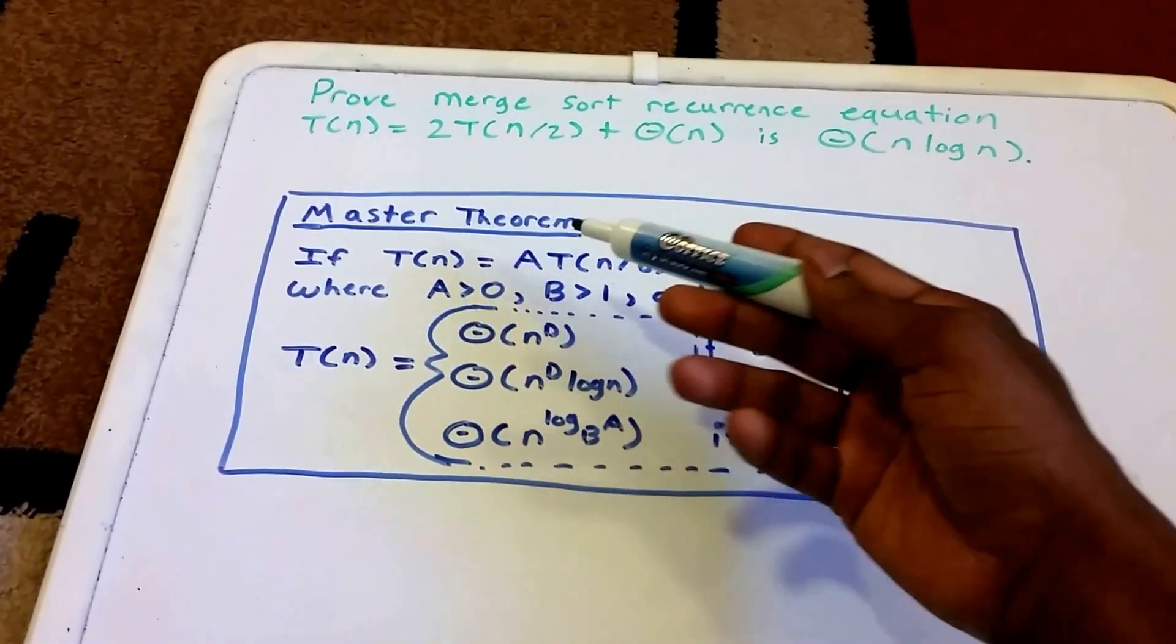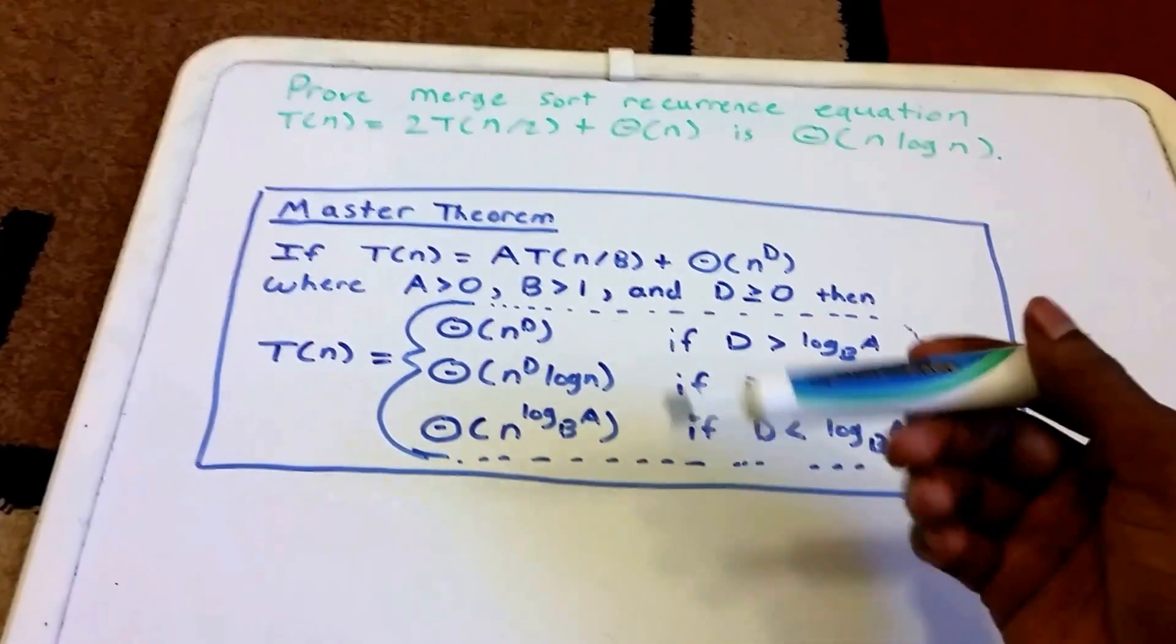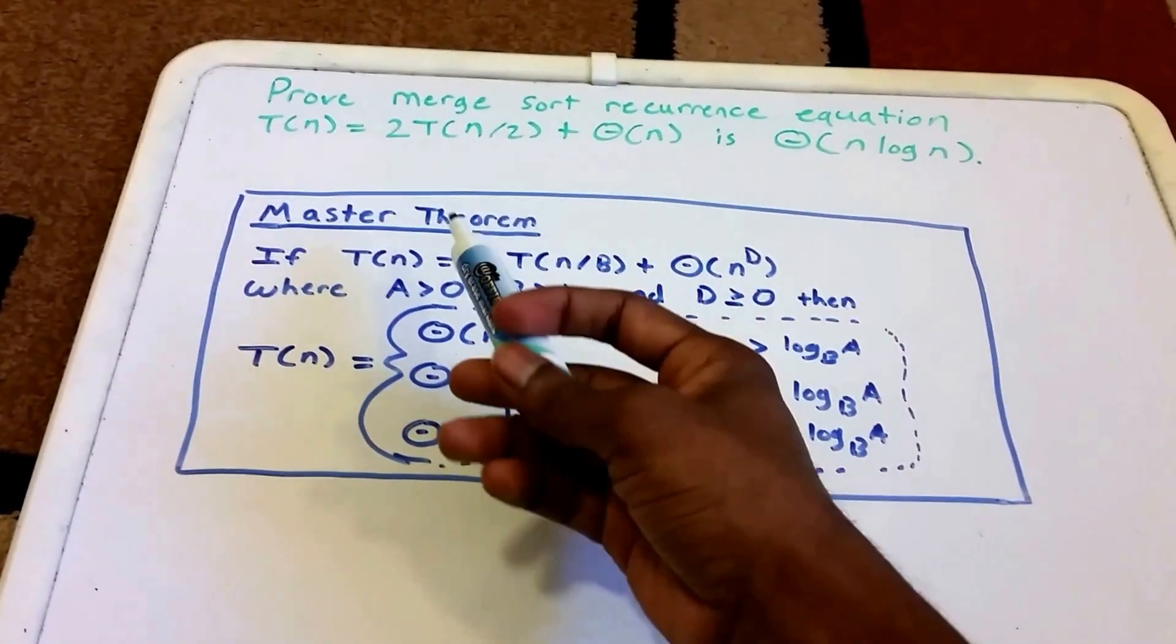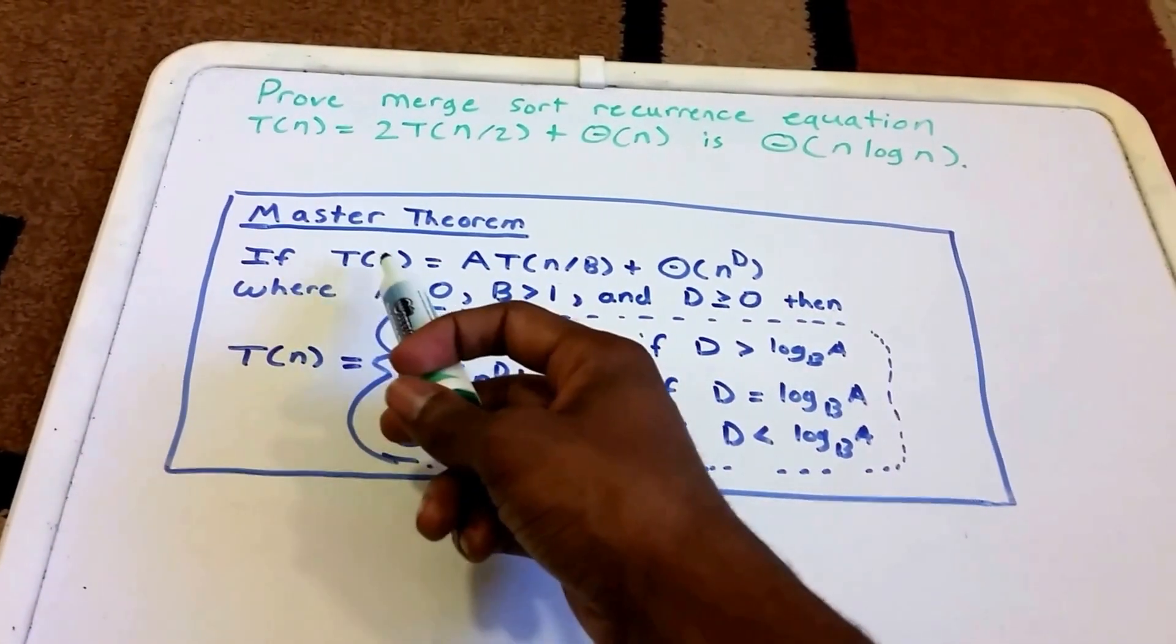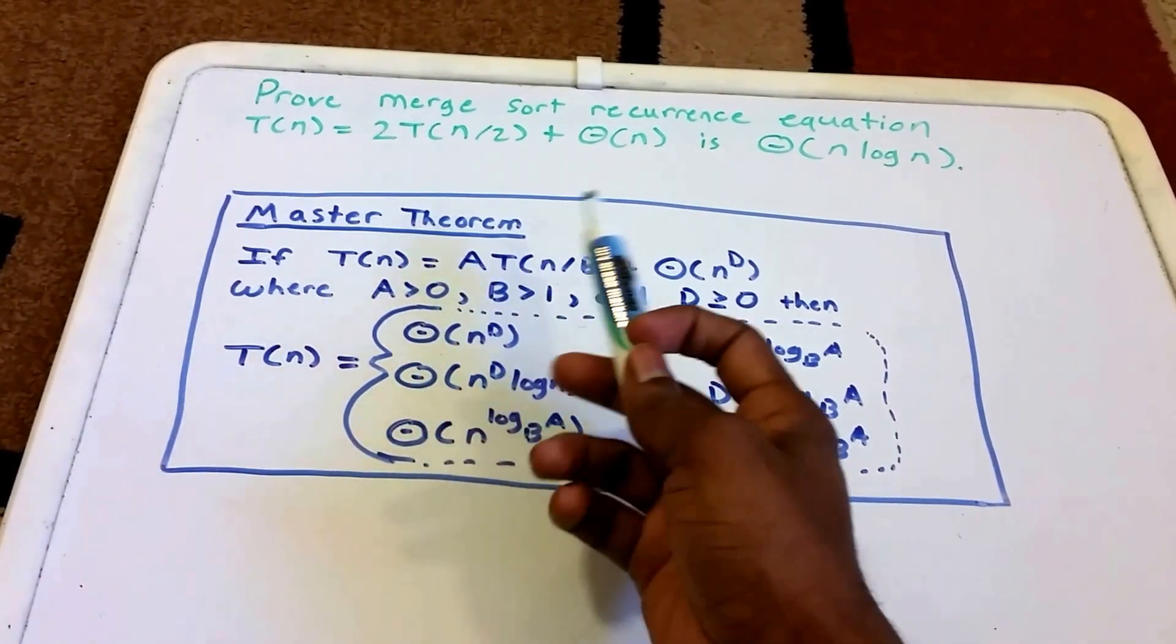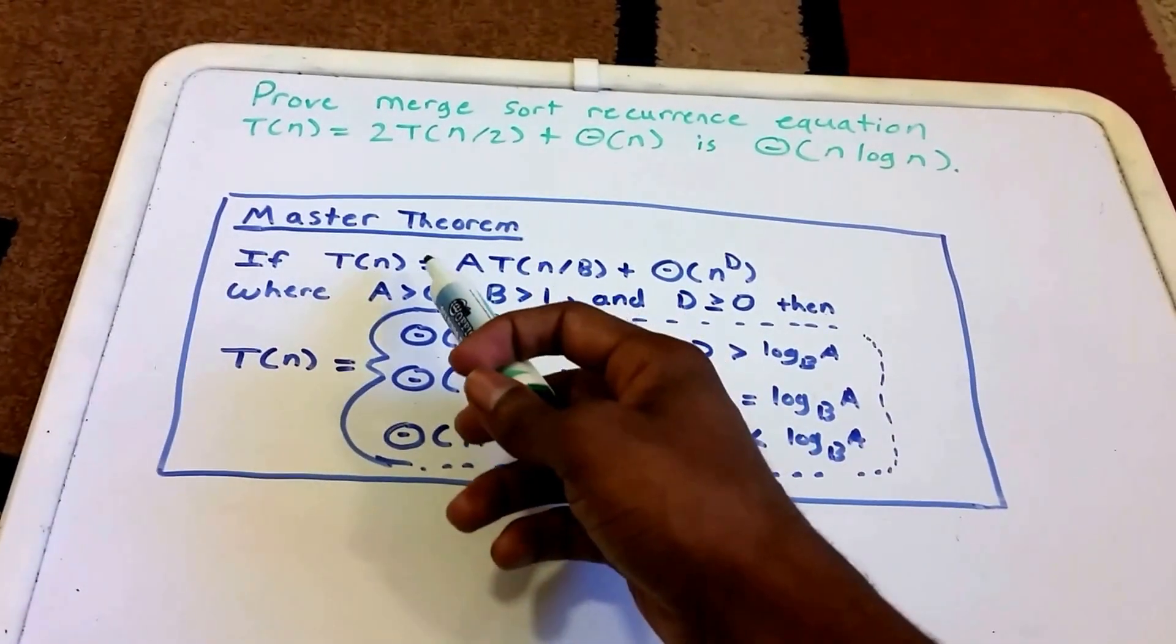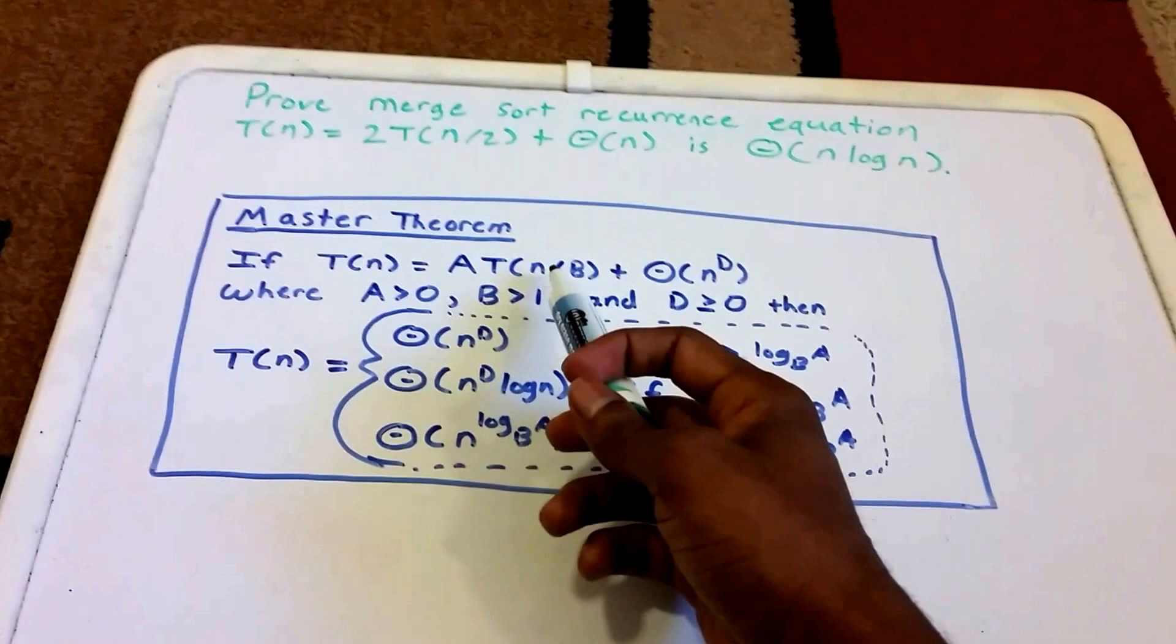The Master Theorem, also called the Master Method, states that if our function T(n) is in the form T(n) = aT(n/B) + Θ(n^D), then...